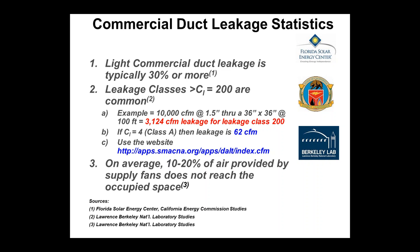On average, 10% to 20% of the air provided by a supply fan never reaches an occupied space at all. Some of the 30% that leaks wafts down through ceiling tiles into the conditioned environment, but 10-20% goes into the plenum return and leaks out the side wall, or into the attic and out of the building. This not only has an energy impact but also a comfort impact — if ductwork is leaking along the run, the last diffuser on the run doesn't get enough air.